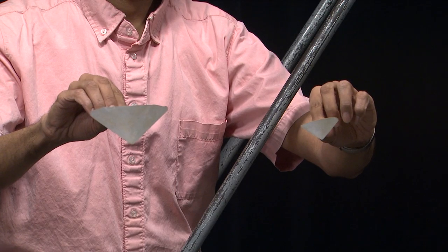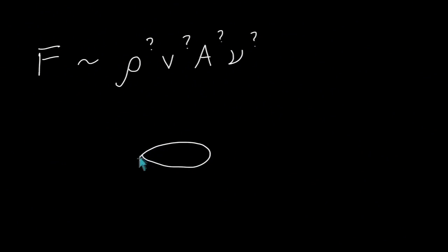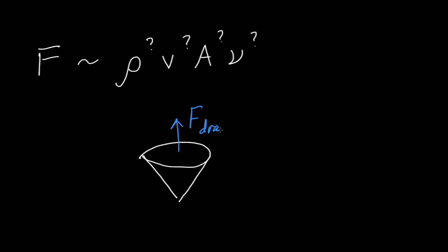The experimental result is that they both fall at roughly the same speed. Now, what does that mean for the exponents in the drag force? To decide, use a free body diagram. Here is a free body diagram of a cone as it falls. What are the forces on the cone? Pause and fill in the diagram.